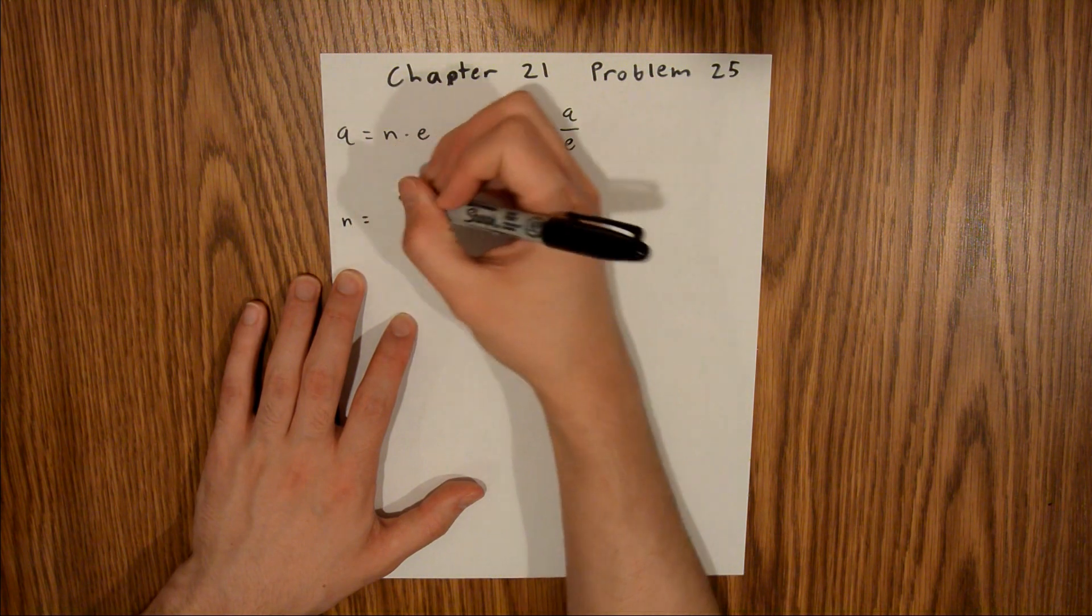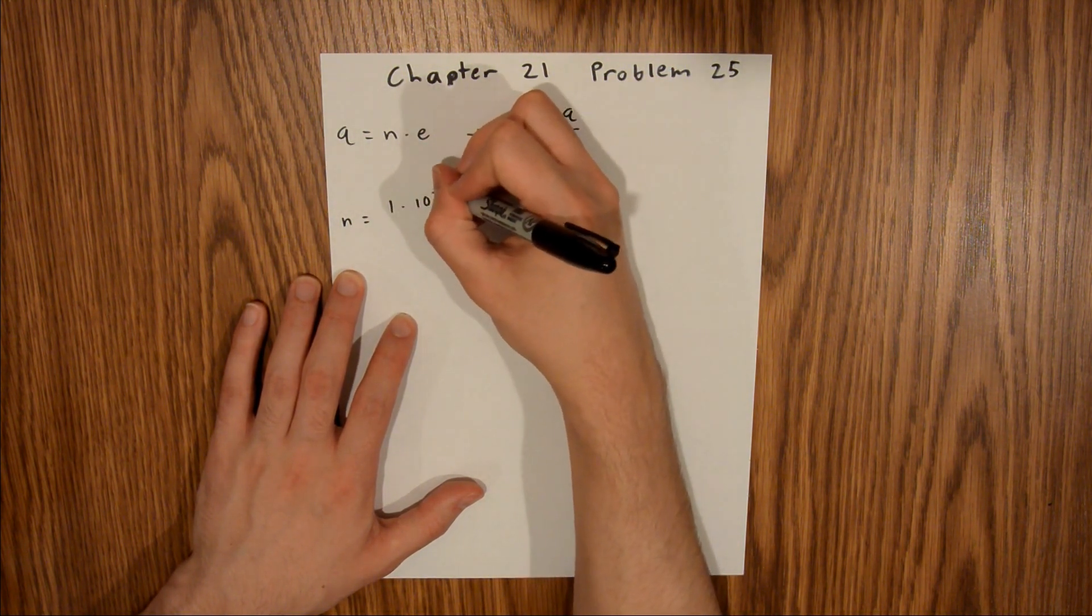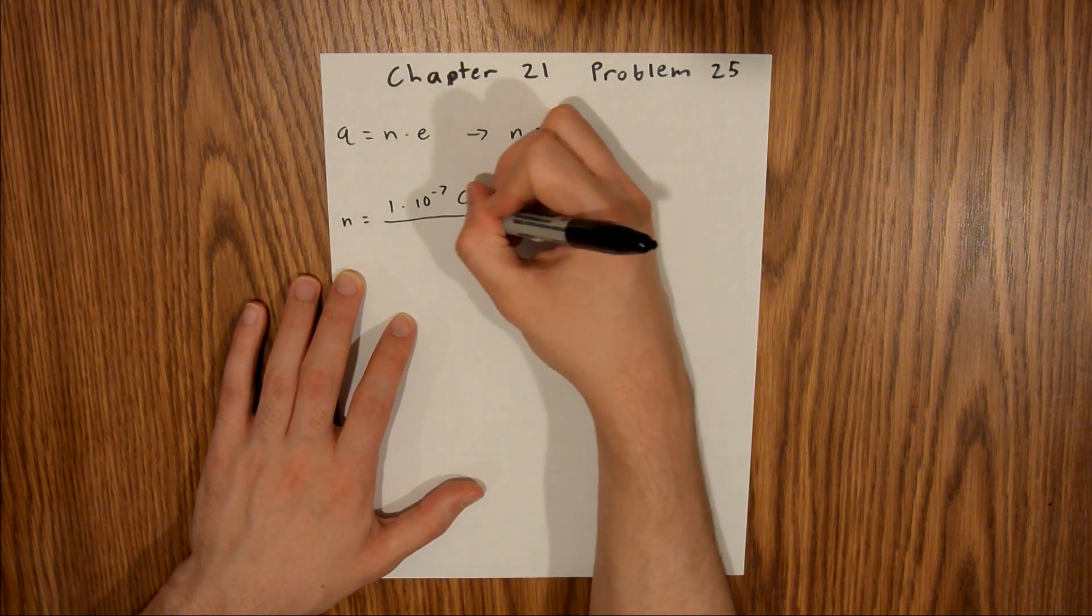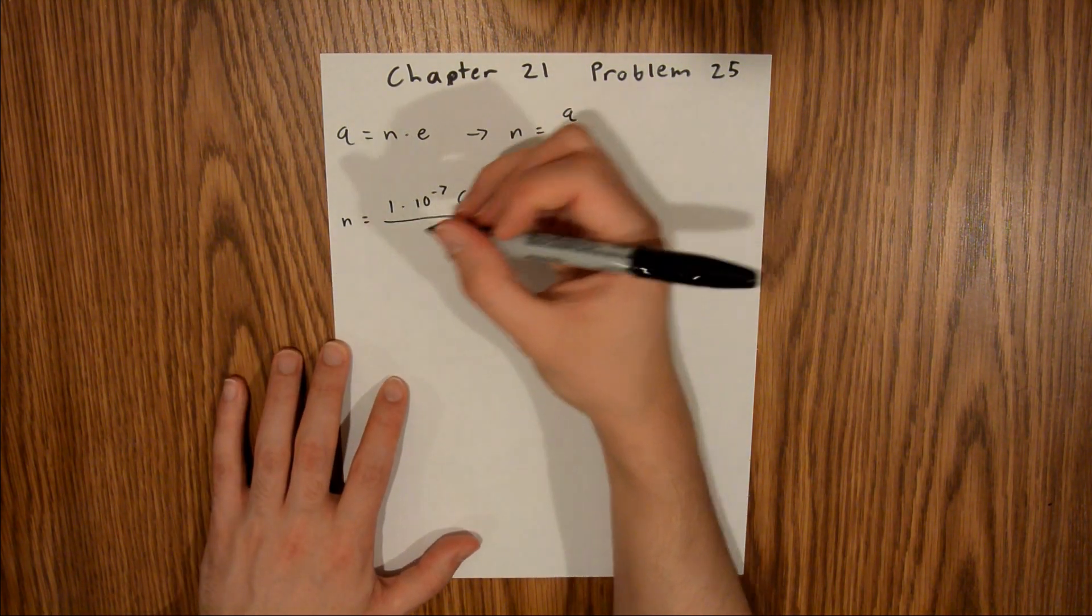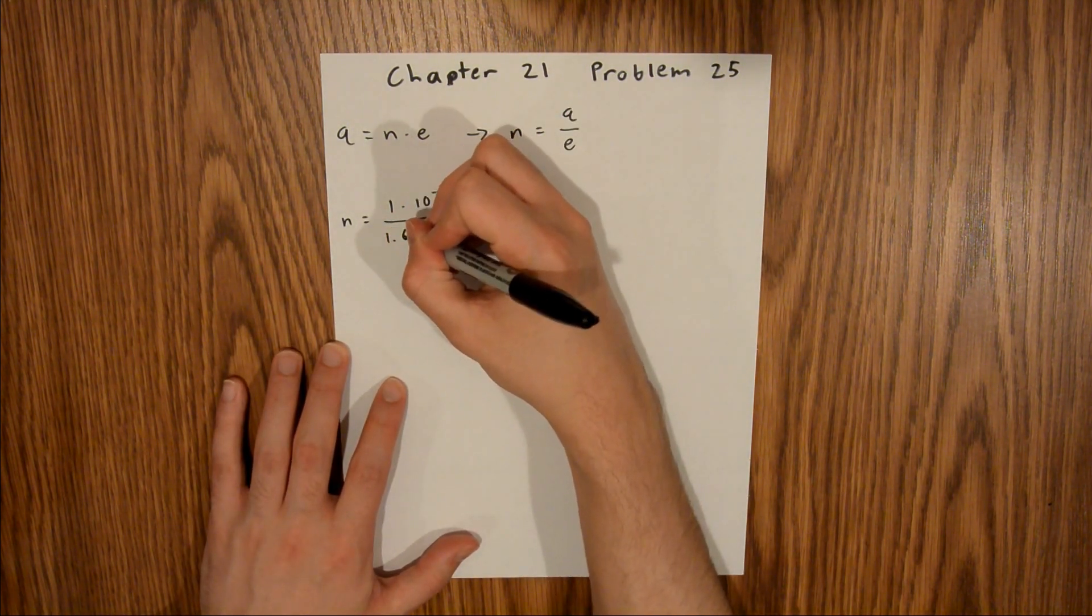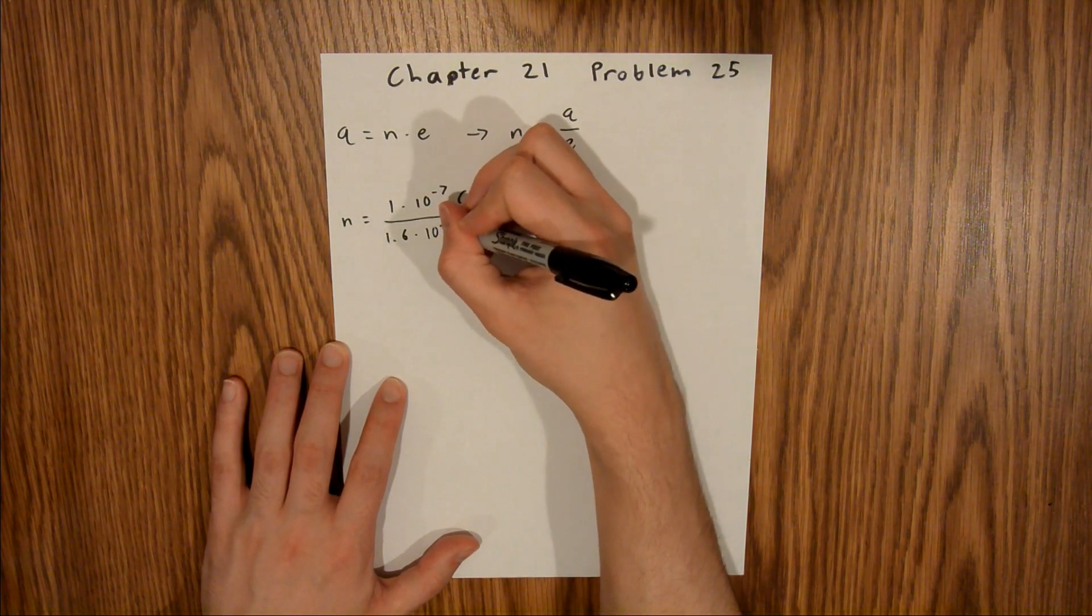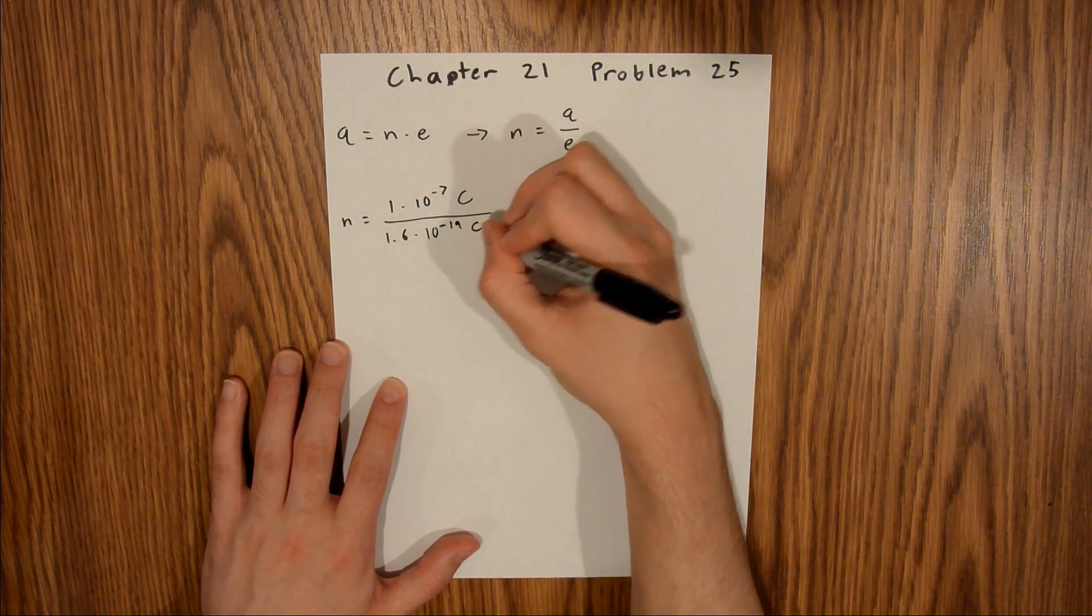n is equal to 1 times 10 to the negative 7th Coulombs divided by the charge of an electron, which is 1.6 times 10 to the negative 19th Coulombs per electron.